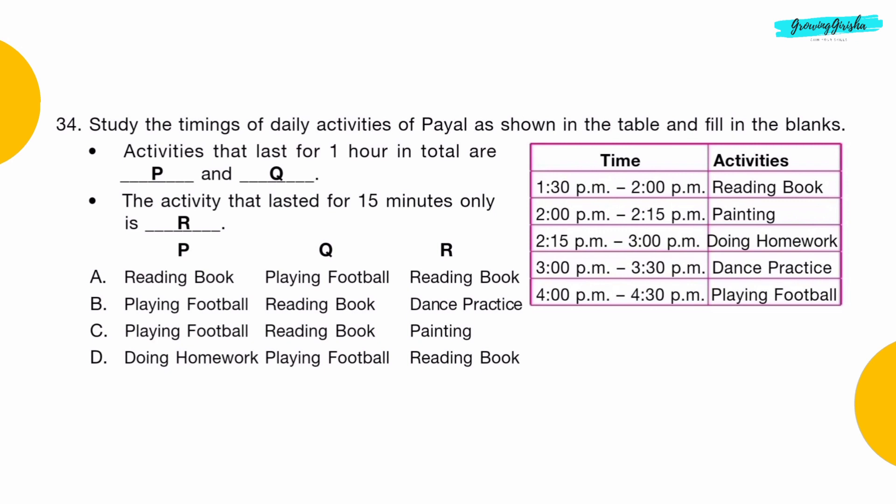Question 34: Study the timings of daily activities as shown in the table and fill in the blanks. Activities that last for 1 hour in total are P and Q. The activity that lasted for 15 minutes only is R. Option C.